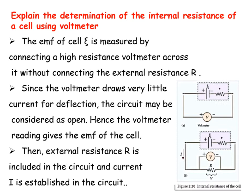See the first diagram. In this diagram, one battery with positive and negative terminals is shown. A high-resistance voltmeter is connected across the terminals with no external resistance R in the circuit. Since the voltmeter draws very little current for deflection, the circuit may be considered as open. Hence, the voltmeter reading gives the EMF of the cell.